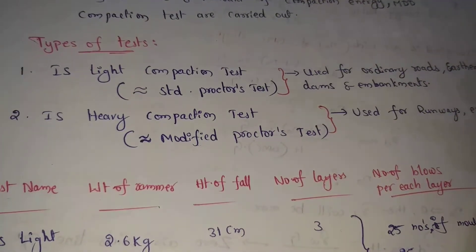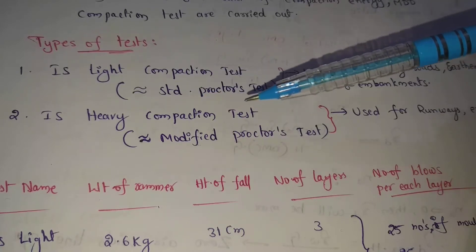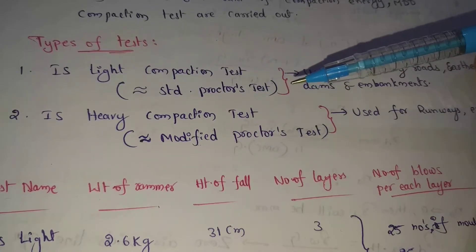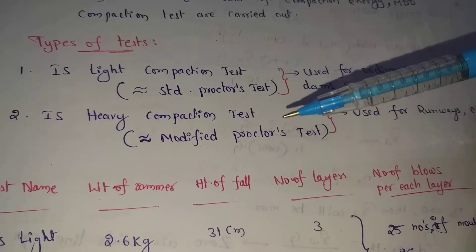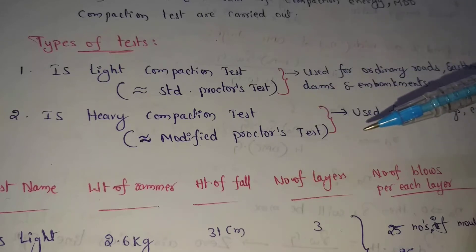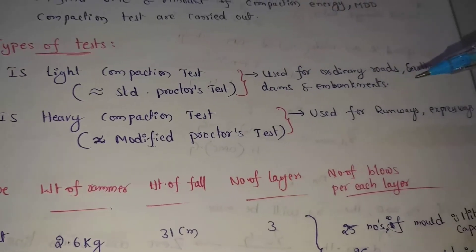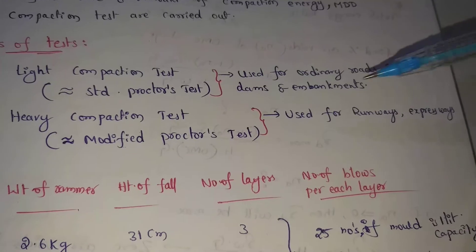The second one is the IS Heavy Compaction Test. It is similar to the Modified Proctor Test. This heavy compaction test is used for railways and expressways.